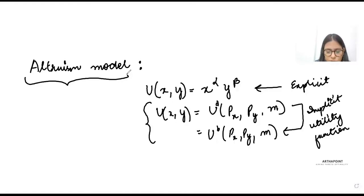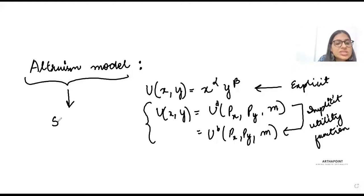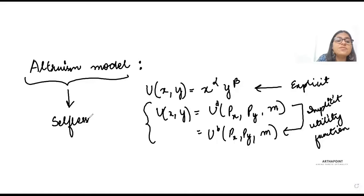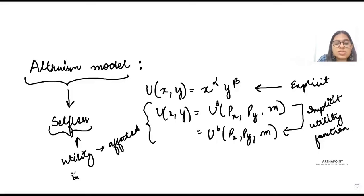Now, what is an altruism model? An altruism model is where you have at least one individual who is selfless — in other words, an individual whose utility is actually affected by the consumption of others.